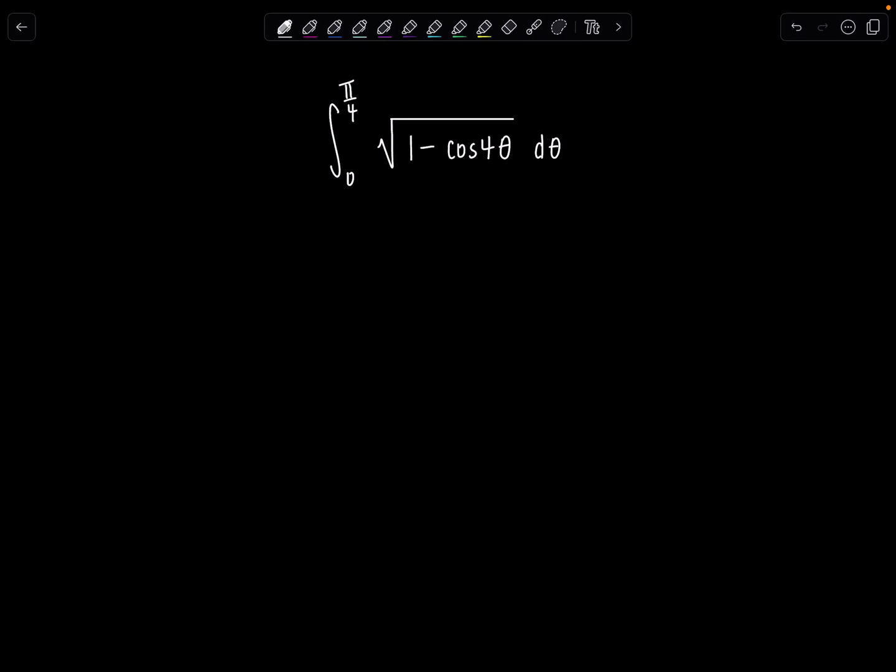Welcome to Math with Professor V. Here's your latest integral of the day. We have a definite integral from 0 to π/4 of the square root of 1 minus cosine 4θ dθ.